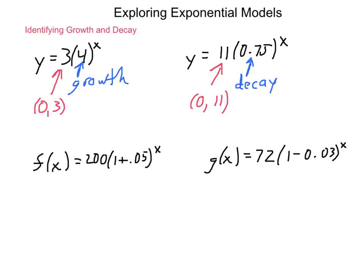Now, a couple that look like investment ideas. f of x equals 200 times 1 plus 0.05 to the x. So, since what's inside of our group is greater than 1, this is 1.05, even though it's not much greater than 1, it is still greater, this shows growth.